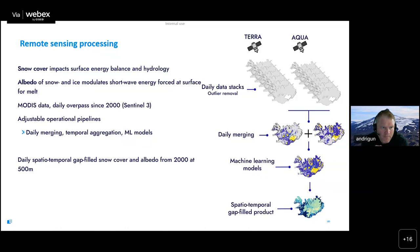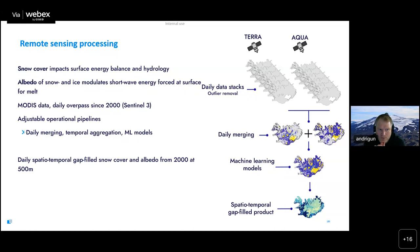We have mainly been using products from the MODIS sensor so far, based on snow cover - which has a great impact on the surface energy balance and therefore hydrology - but also albedo of both snow and glaciers, as it is a modulator of shortwave energy flux at the surface. We've created operational pipelines that ingest MODIS data and create gap-filled products using temporal aggregation and machine learning models, giving fractional snow cover and albedo for ice-covered surfaces. We're looking into fusing albedo products from the SICIs project led by Jason Box at GEUS, as MODIS has an end-of-life in a few years.